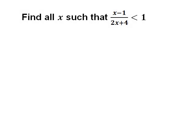Let's have a look at this inequality: x minus 1 divided by 2x plus 4 is less than 1, and we're supposed to find all x that fulfill this inequality. There are various approaches you could take here, one of which you might have been discouraged to take — the one where we simply multiply both sides by 2x plus 4.